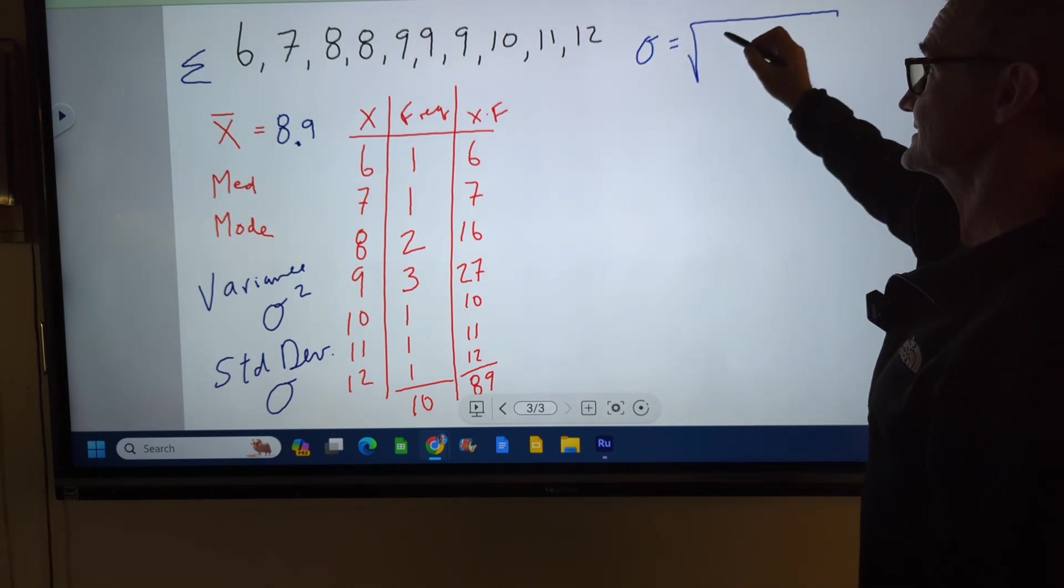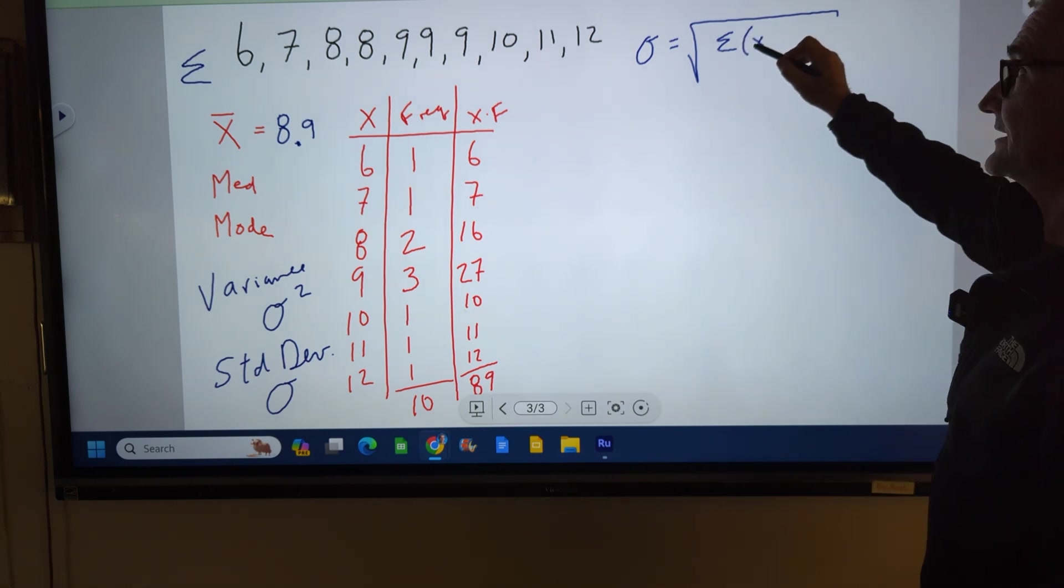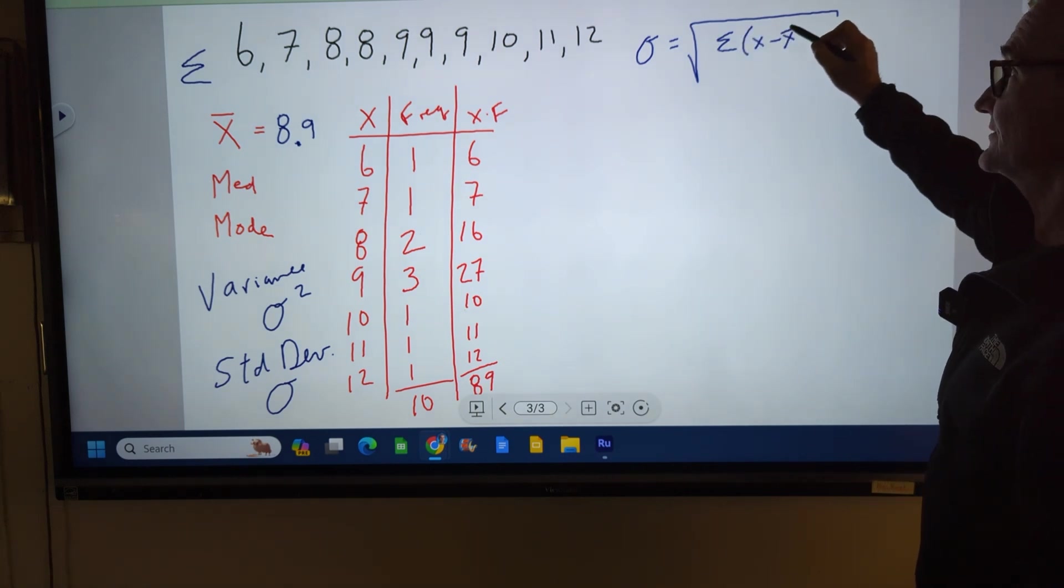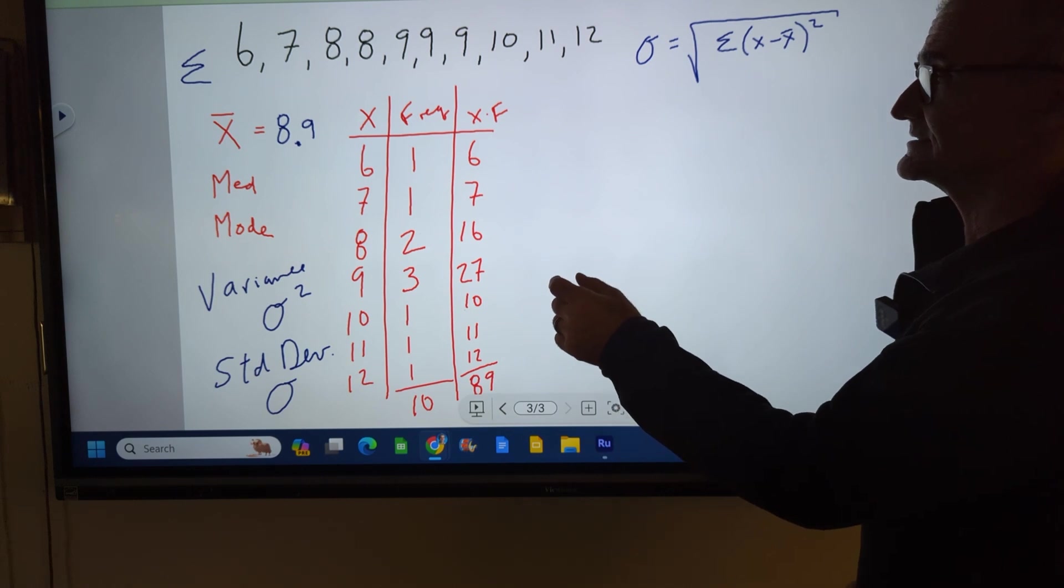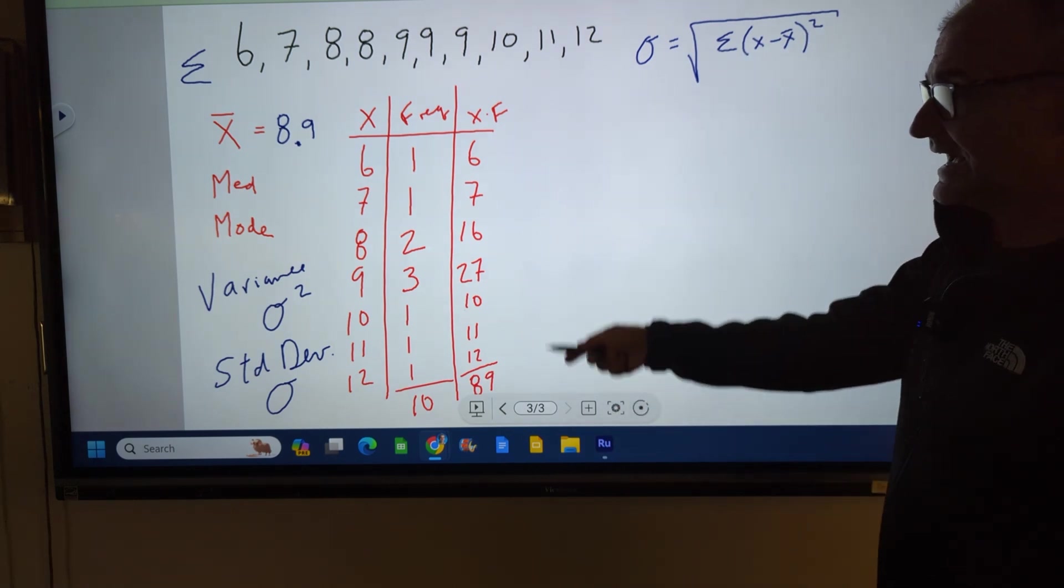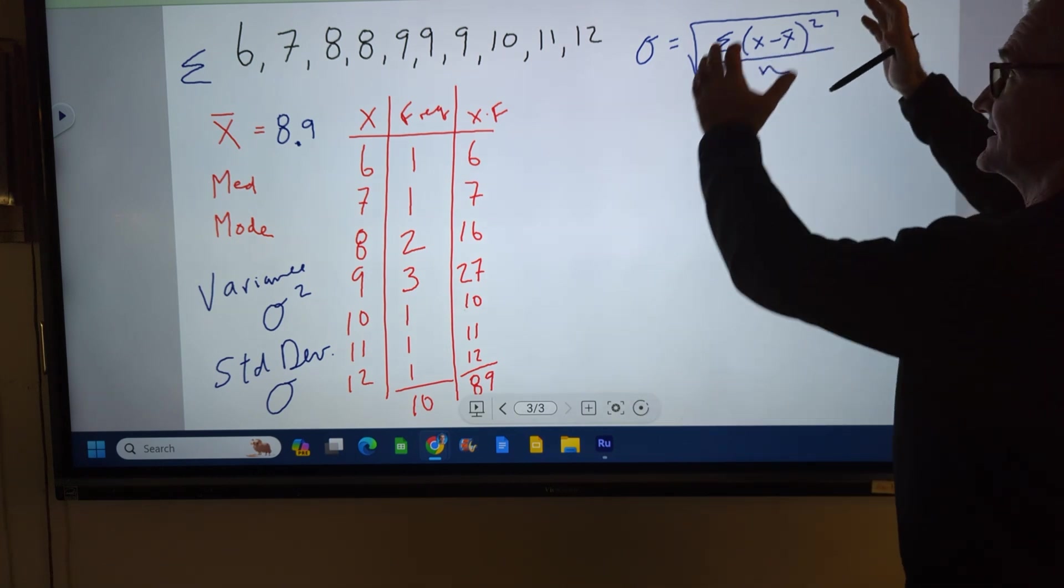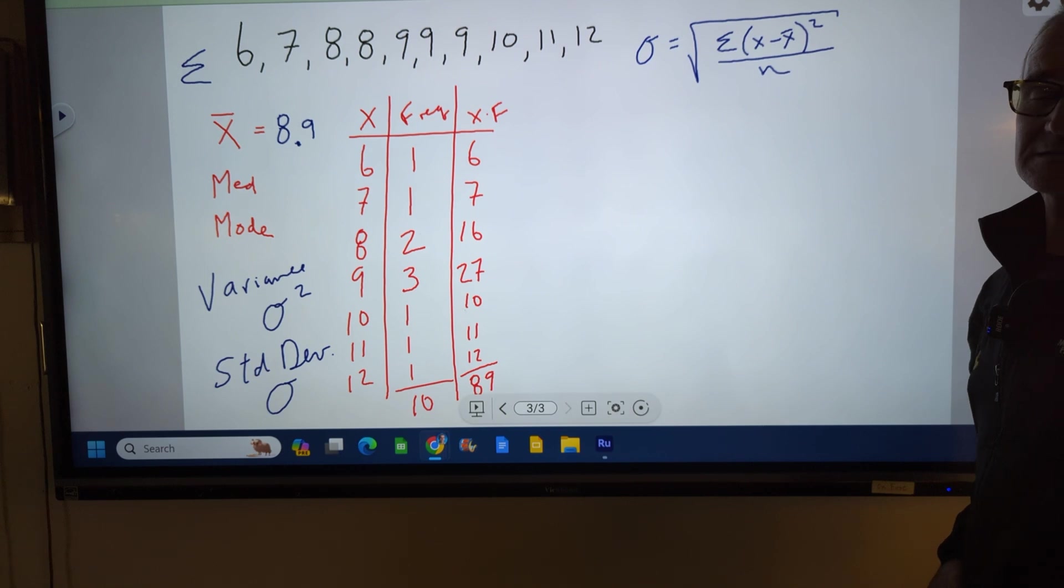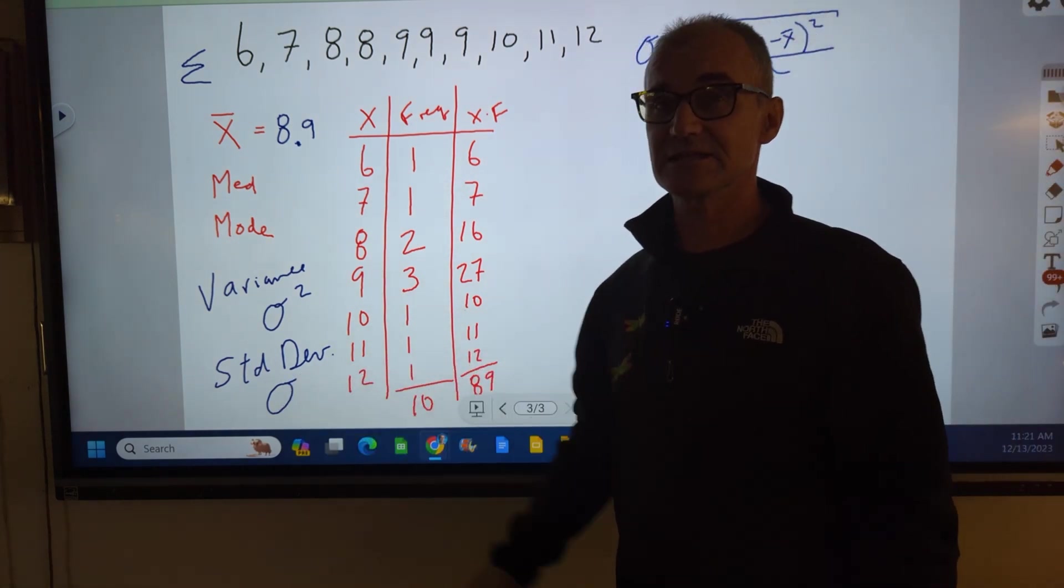And variance is defined as the sum of the difference between the actual value and the average value. That's a deviation, squared. So I've got to figure out the difference between x and the average, square it, then I have to add up those 10 values, and then I divide that by n. That right there will give me the variance. Once I have the variance, I take the square root of it to get the standard deviation.